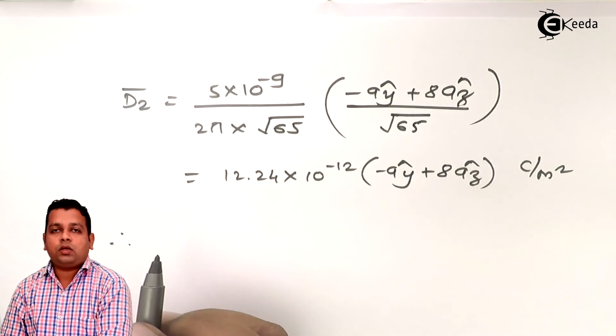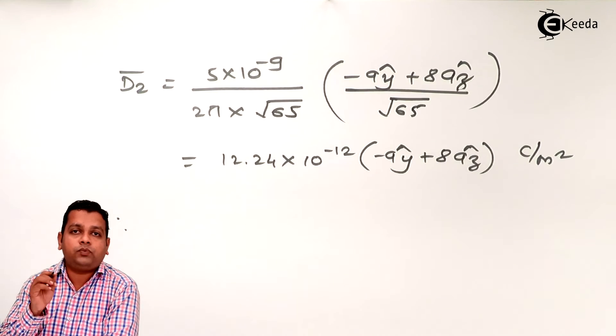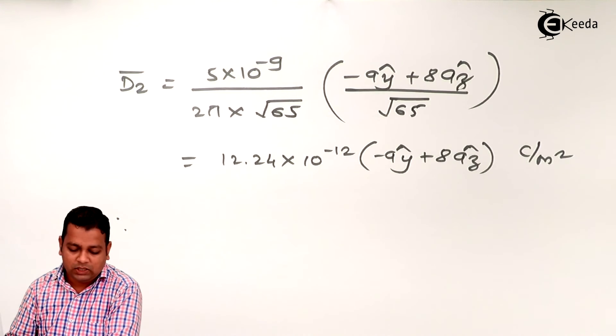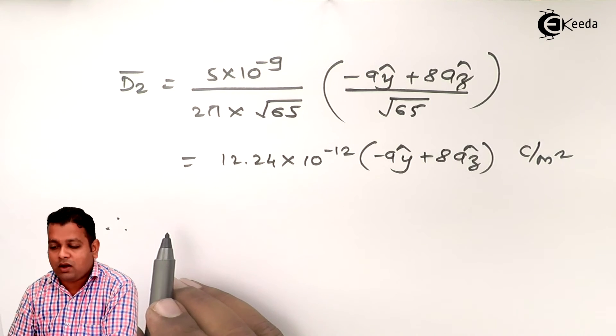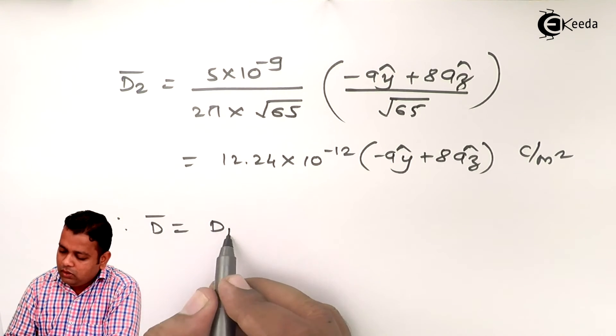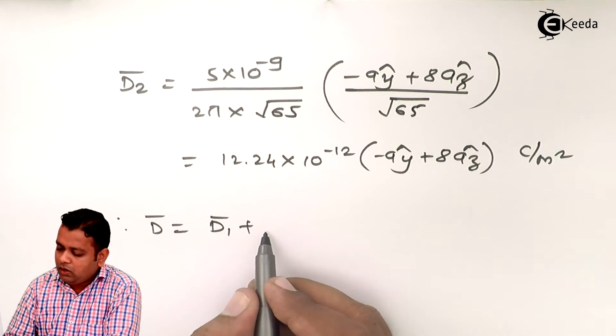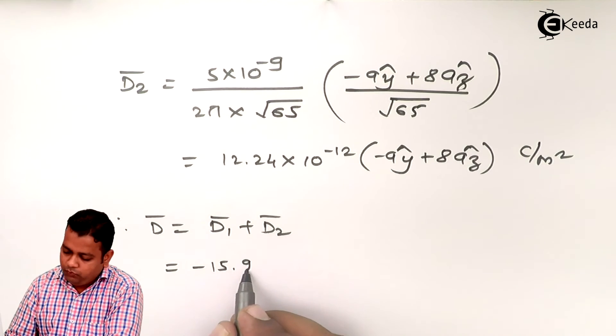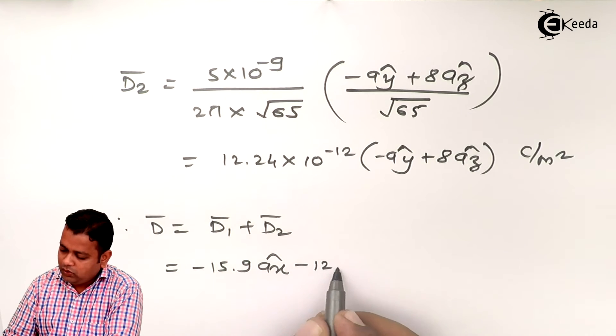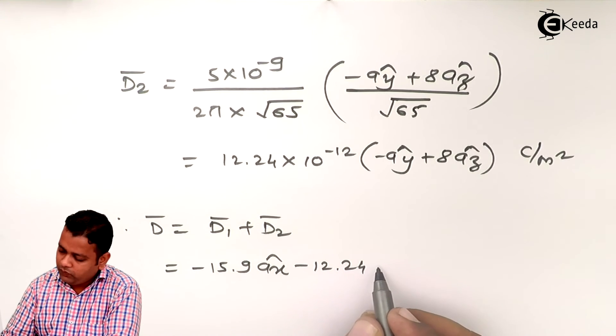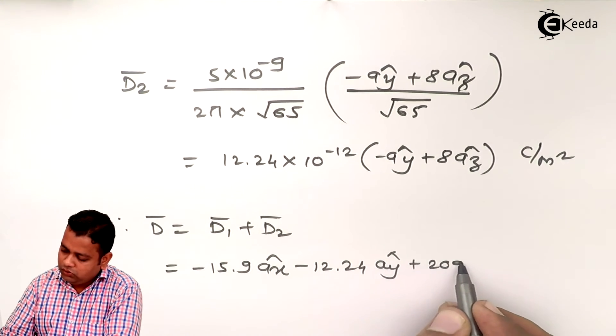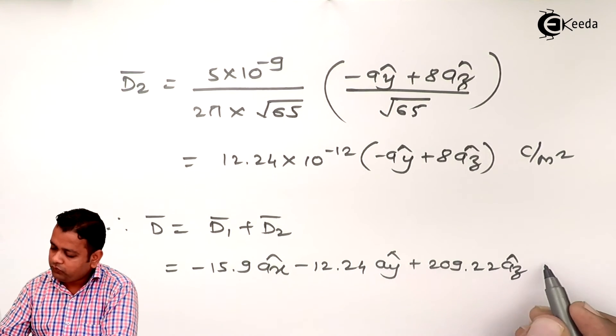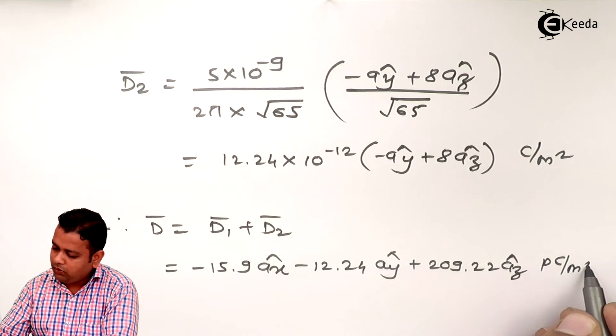So the net or effective electric flux density at the field point T because of both the uniform infinite line charges is summation of D1 bar and D2 bar. So D bar is equal to D1 bar plus D2 bar. Finally we get minus 15.9 Ax cap minus 12.24 Ay cap plus 209.22 Az cap picocoulomb per meter square.